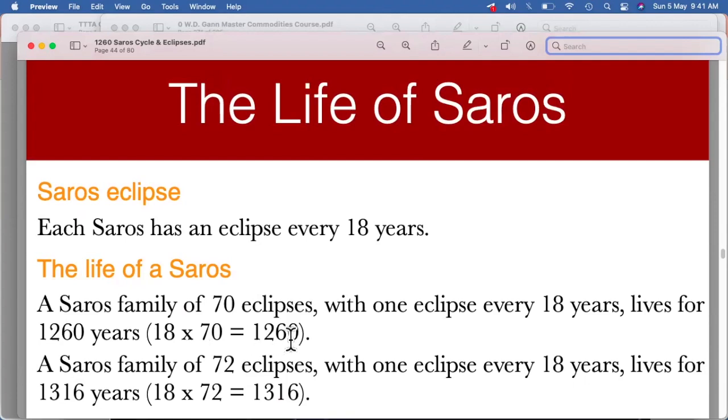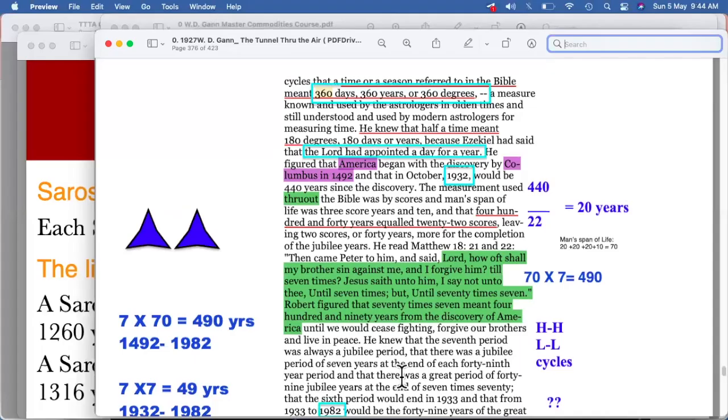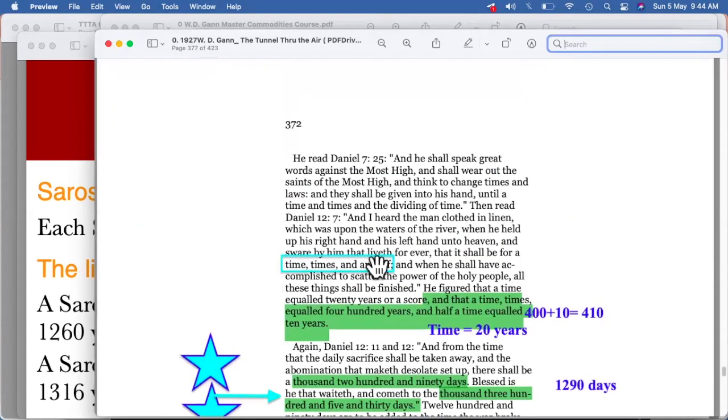There are 70 to 72 eclipses in each Saros. This is how we get 18 into 70, that is 1260 years. And that is how we come down to the years of 1260. Indirectly he has mentioned about this in terms of 360 days, 360 years cycles which are there of time, times and a half, day for a year, year for a day, again giving us various hints together.